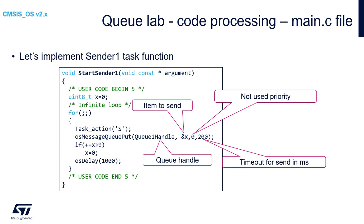After analyzing the generated code, let's do some code writing. We'll start with the sender1 task function — the function which should send something to the queue. Within the initialization part of the sender1 function, just after user code begin 5, we'll declare an 8-bit unsigned value x equal to 0. Then within the endless loop, we'll start from the task action — in this case sending 'S' as sender. Then we'll try to send some data into the queue using osMessageQueuePut. The first argument is queue1Handle, the second is the address of our x variable, the third is priority (not used), and at the end, the timeout given in milliseconds.